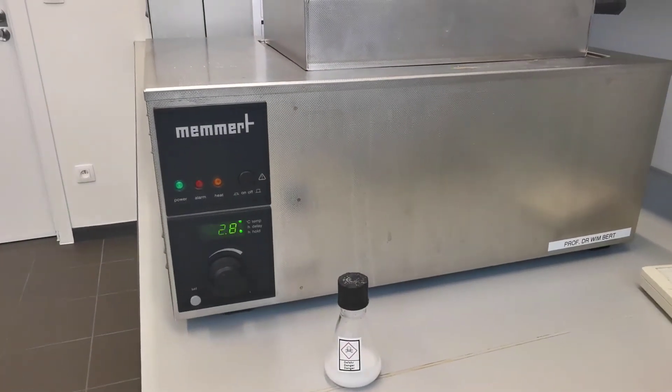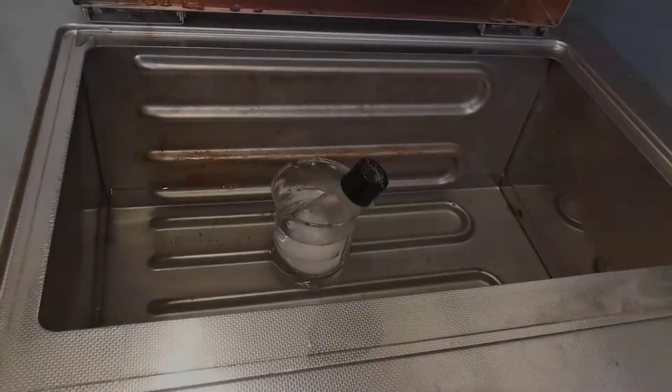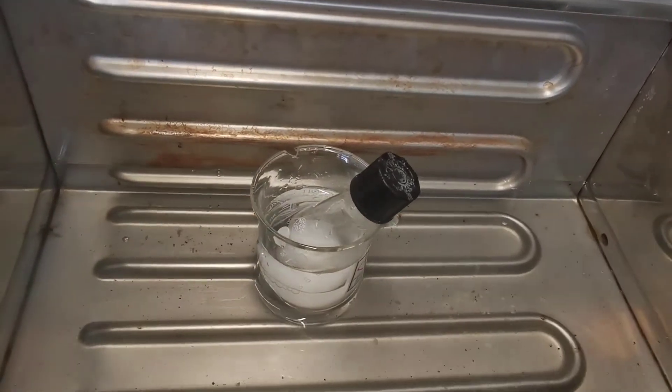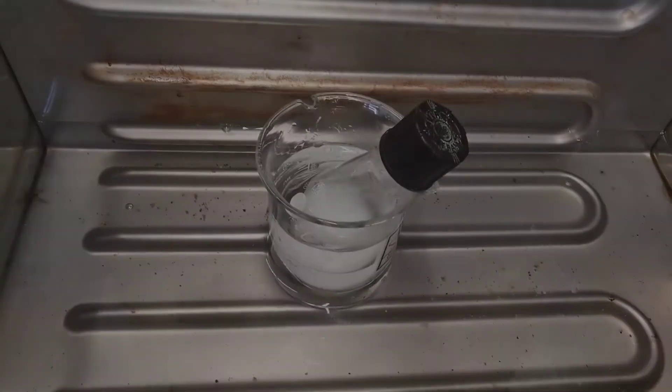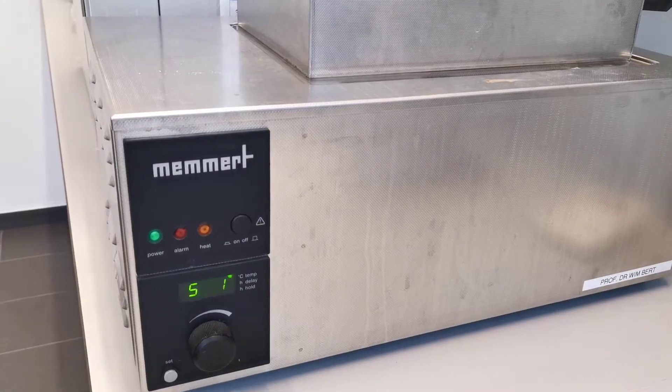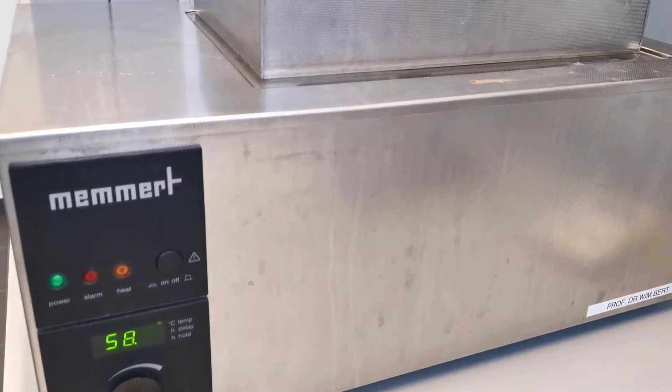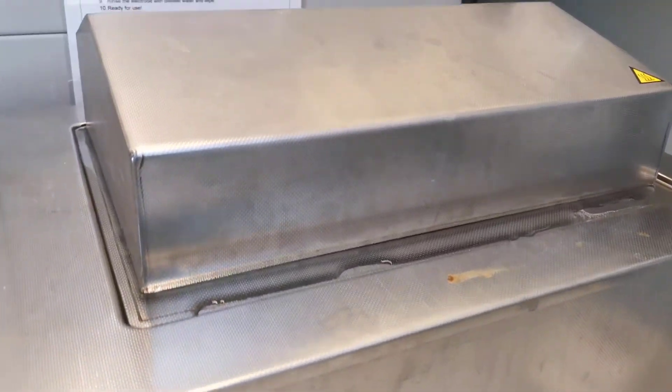A water bath is preheated at about 60 degrees Celsius, and the flask is transferred in the water bath, leaving the lid of the flask a bit loose. The flask is incubated for about 30 to 40 minutes, during which it is swirled every 10 to 15 minutes to help dissolve the PFA powder.